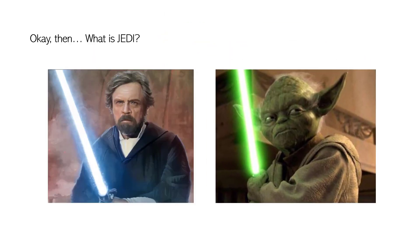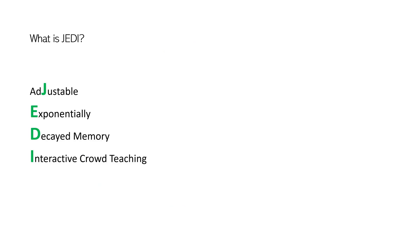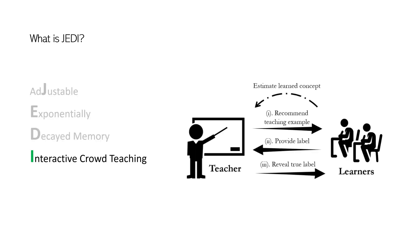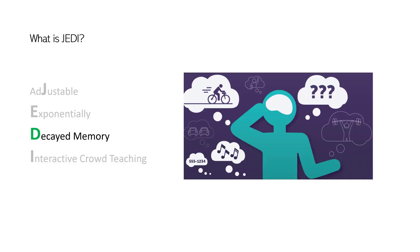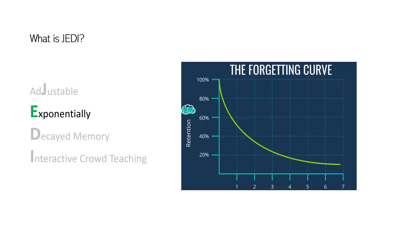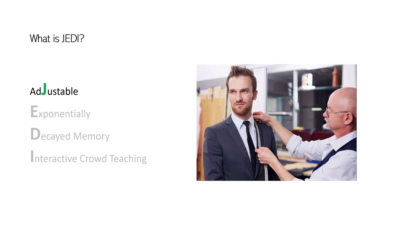So, the next question is what is JEDI? In this work, JEDI is short for Adjustable Exponential Decay Memory Interactive Core Teaching. Interactive Core Teaching means our framework could interactively teach the concept to the learners. Decay Memory means that we made the assumption that the learners will gradually forget things they have learned. Exponentially means that the memory decay follows the trend of an exponential curve. At last, Adjustable means each learner will get a personalized teaching set that is specially designed for her.